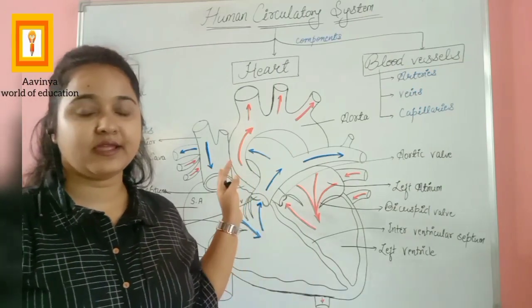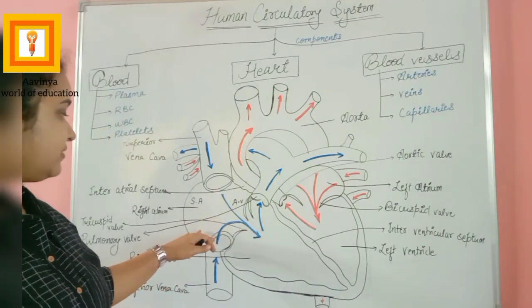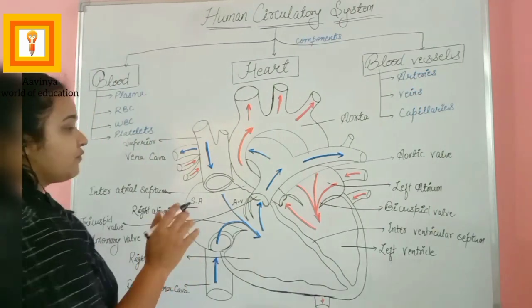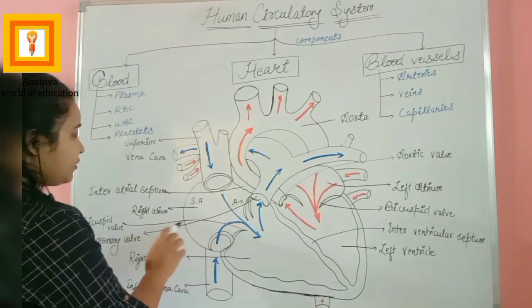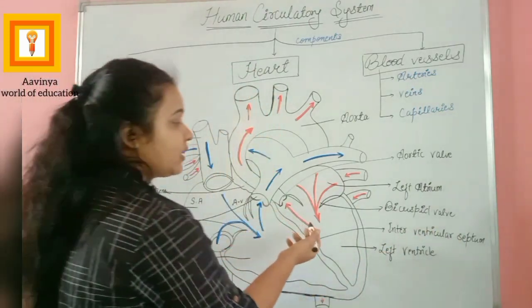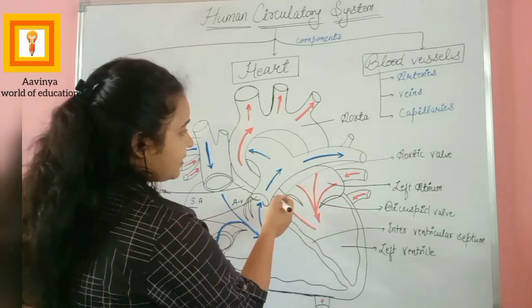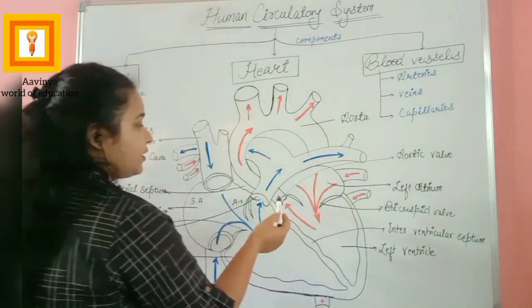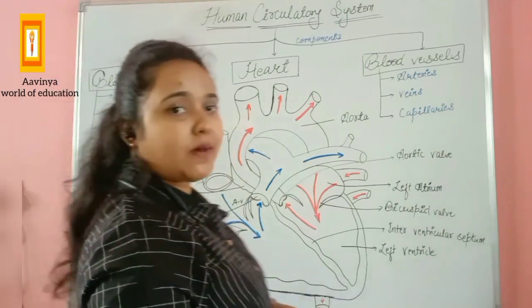The septum divides the ventricles and atria. Valves are present between the atria and ventricles. There are four types of valves in the heart: the tricuspid valve on the right side, the bicuspid valve (or mitral valve) on the left side, the pulmonary valve in the pulmonary artery, and the aortic valve in the aorta.